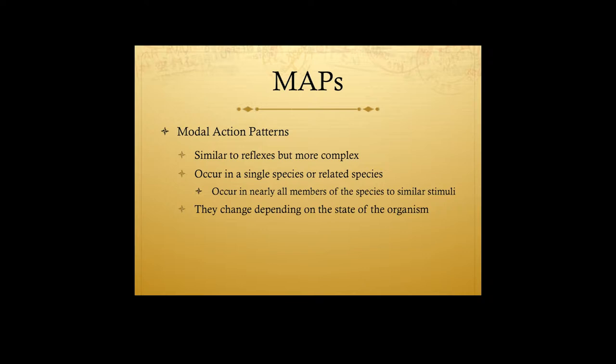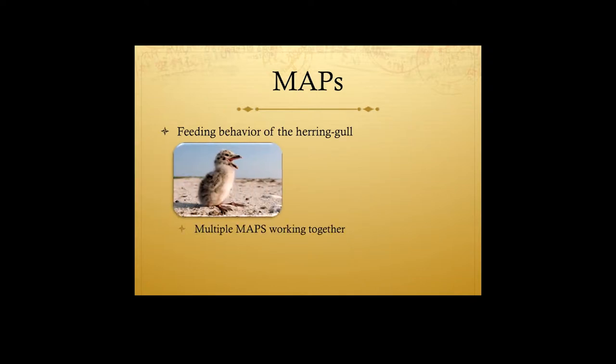Here's the cool part: MAPs change depending on the state of the organism. Depending on things about the organism, a certain MAP may be present or may not be present. The male stickleback fish is a great example — it has to do with mating behavior, and the organism has to be in a certain state of development. These MAPs are usually only open for certain windows; they're only available for certain times during the organism's development and may go away after six months or a year.